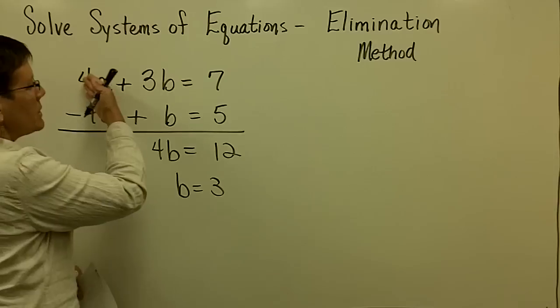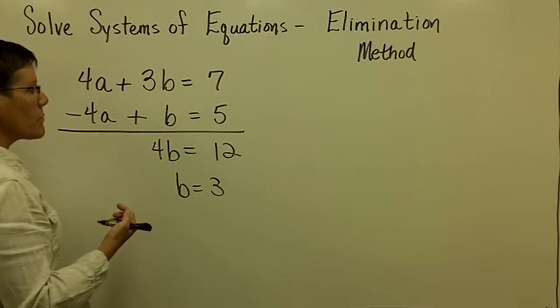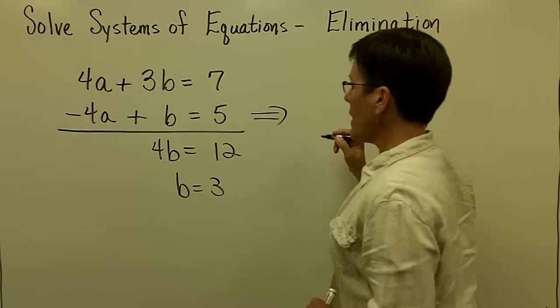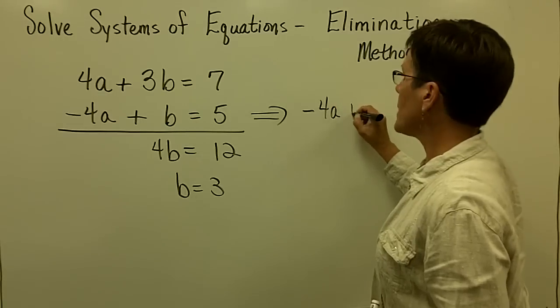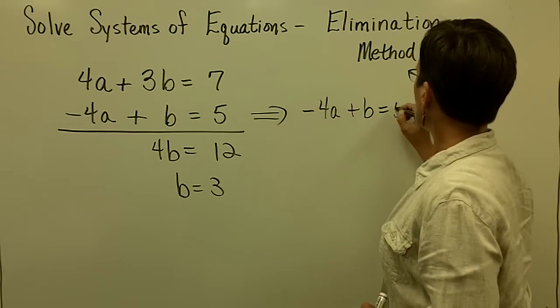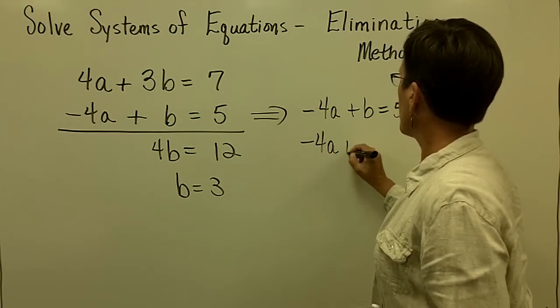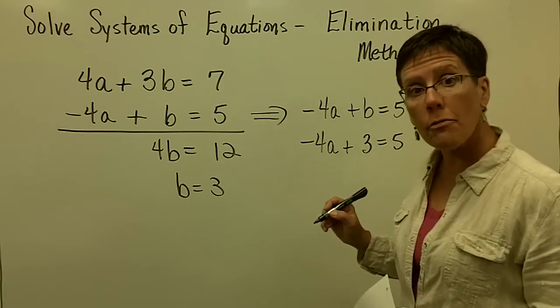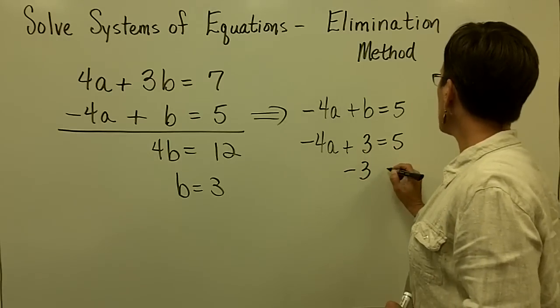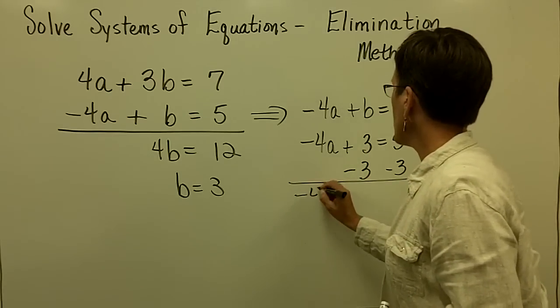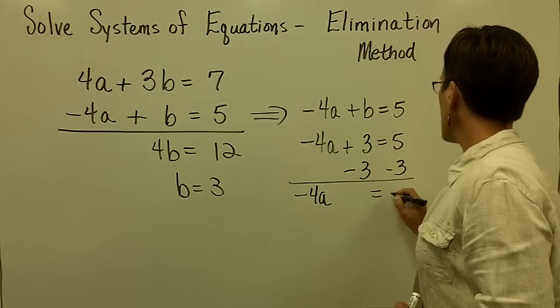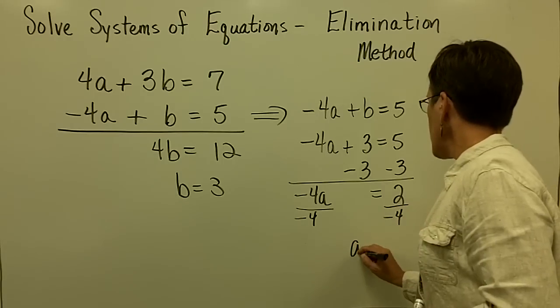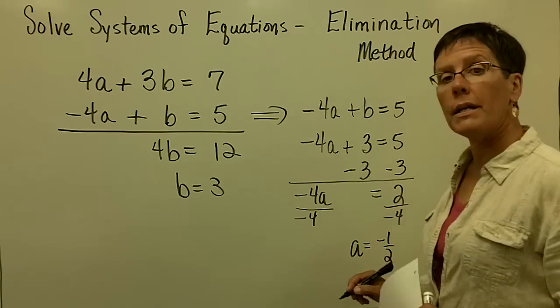Once you know that, you plug it into either this equation or this equation. I'm just going to go ahead and take this equation. So I'm going to take this negative 4a plus b is equal to 5. And I just found out that my value for b is 3. And I have to solve for the letter a now. So I'm going to subtract 3 from both sides. And I have negative 4a equals 2. And then when I divide both sides by a negative 4, be very careful, I find out that a is equal to negative 1 half.